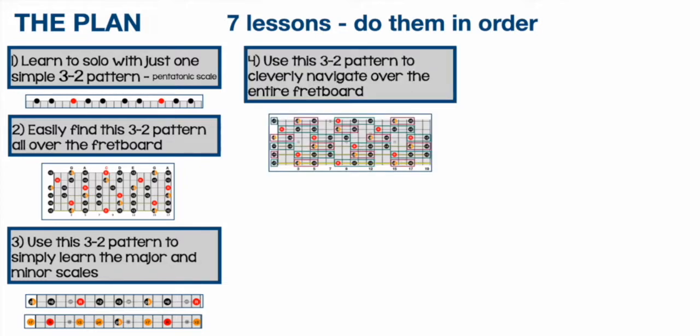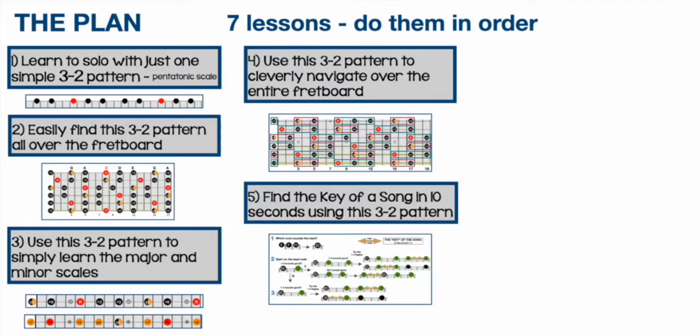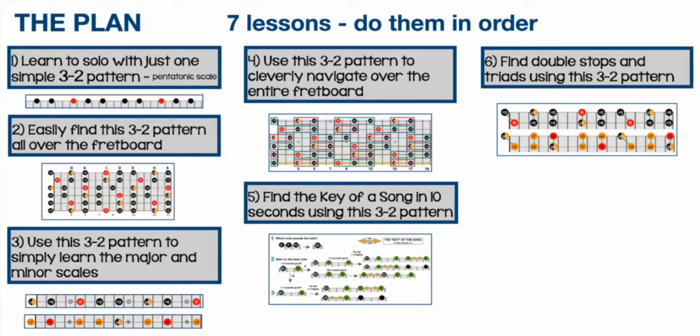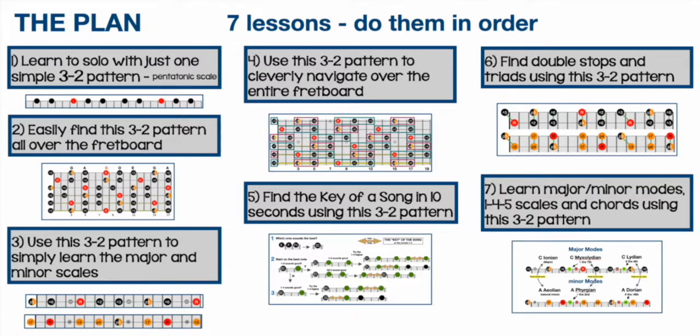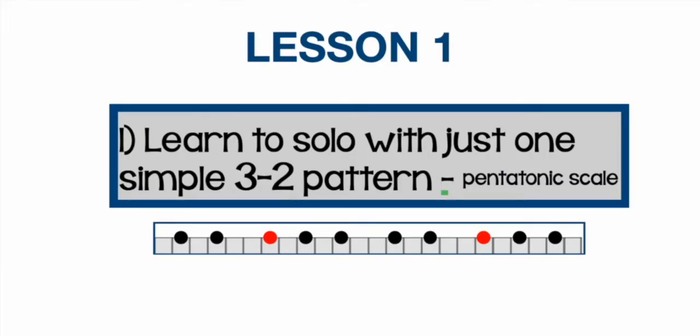Then use this three two pattern to cleverly navigate over the entire fretboard, then use it to help you figure out the key of a song in about 10 seconds, and with a few little tips and tricks find double stops and triads using that pattern. Finally, learn major minor modes, one four five scales and chords using this three two pattern. In this first lesson you'll learn to solo with just one simple three two pattern, and it's basically the pentatonic scale. So let's get started.